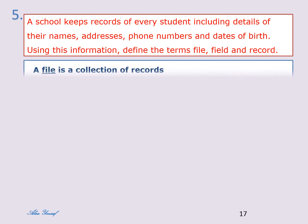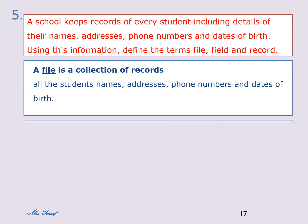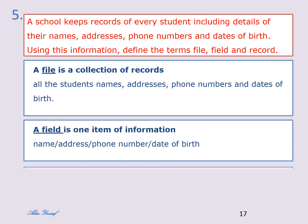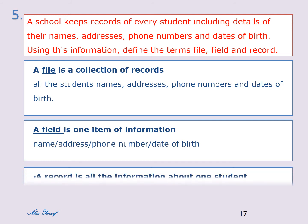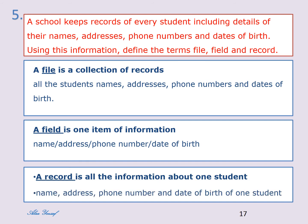A file is a collection of records — for example, all the students' names, addresses, phone numbers, and dates of birth. A field is one item of information, such as name, address, phone number, or date of birth. A record is all the information about one student, such as the name, address, phone number, and date of birth of one student.